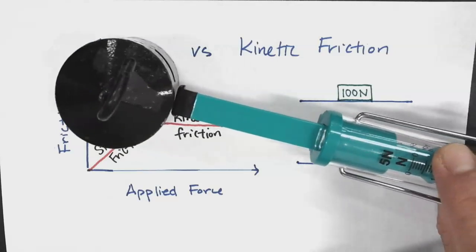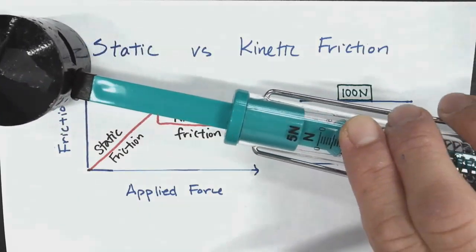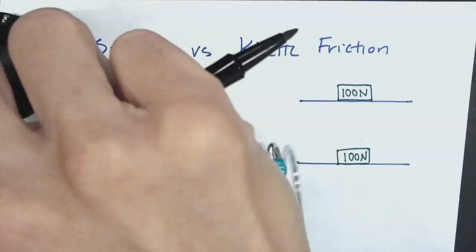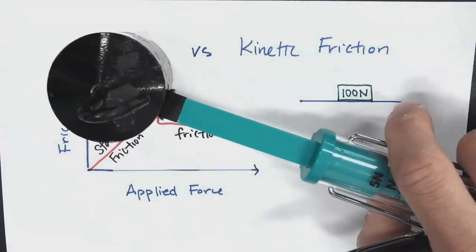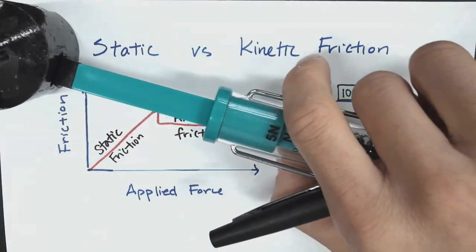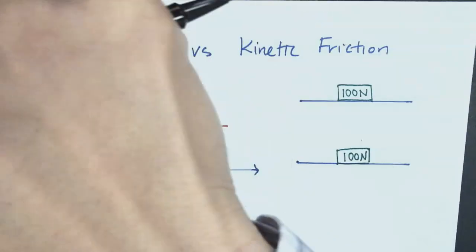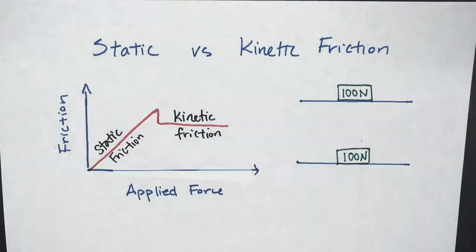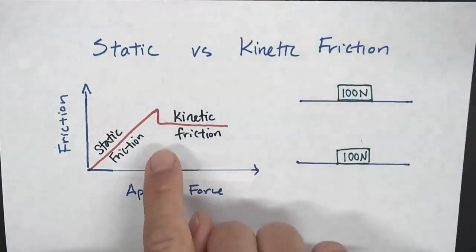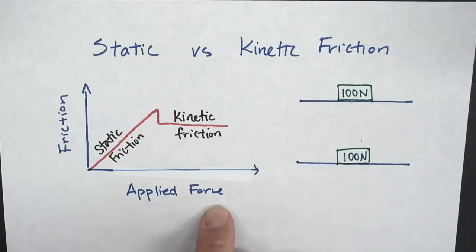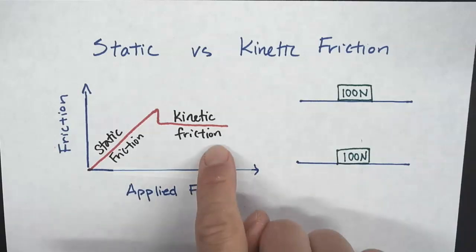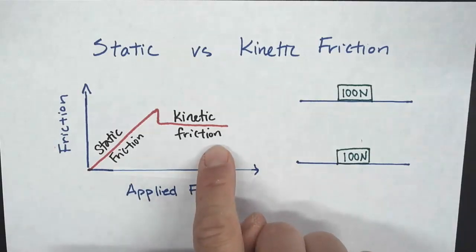And then now it starts to move. Once it starts to move, we refer to that as kinetic friction. And notice that kinetic friction is constant. Even if I exert a greater amount of applied force, the kinetic friction is still the same amount.